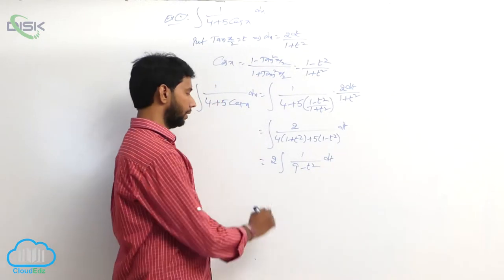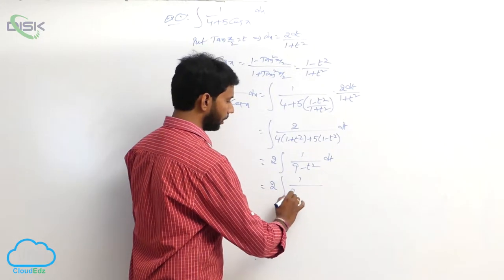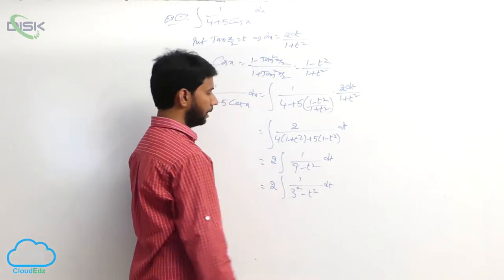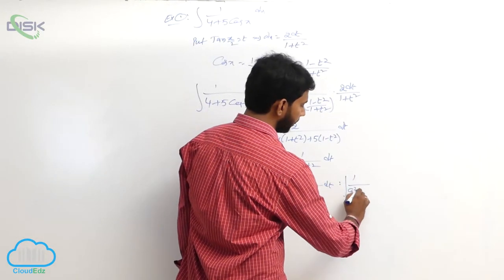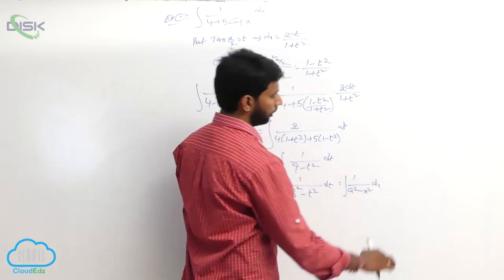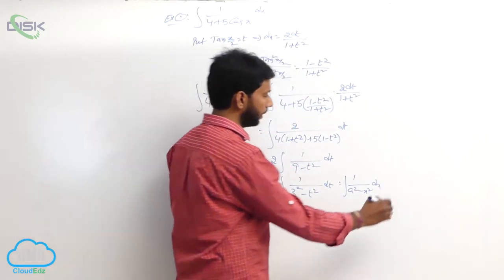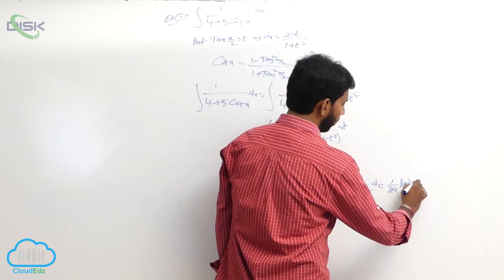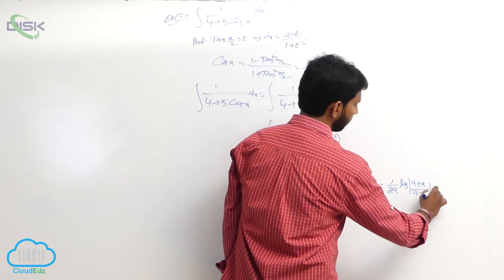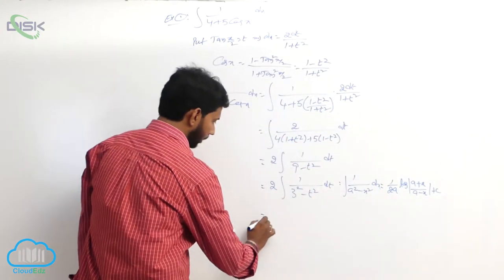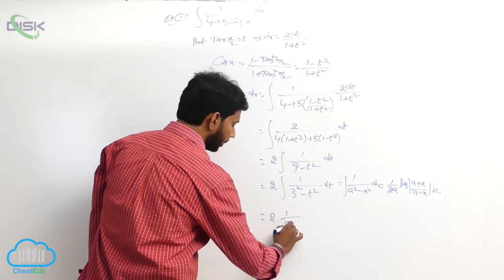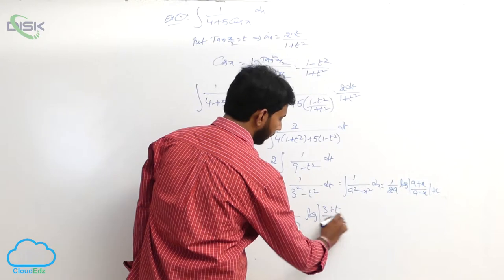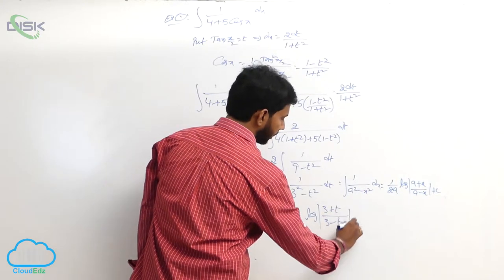Since 9 minus t square equals 3 square minus t square, this is of the form integral of 1 by (a square minus x square) dx. The formula is 1 by 2a times log mod of (a plus x) by (a minus x) plus constant. Here a equals 3, so the result is 1 by 3 times log mod of (3 plus t) by (3 minus t) plus constant.